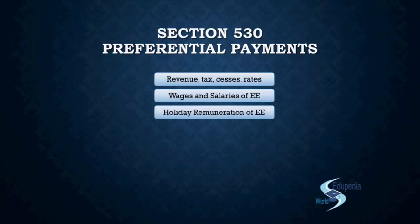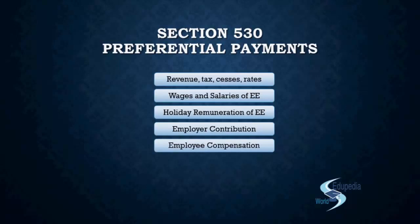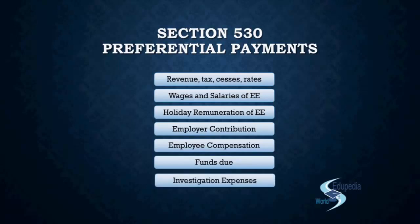Next is holiday remuneration to the employees — that is also a payment to employees who will need money. Then employer's contribution, where you contribute to PF and everything. Then you have employee's compensation. Then you have the funds that are due and need to be paid. And at the end, the investigation expenses. We will come in detail to these topics. But these people are the priority — they need to be paid when you have the money.